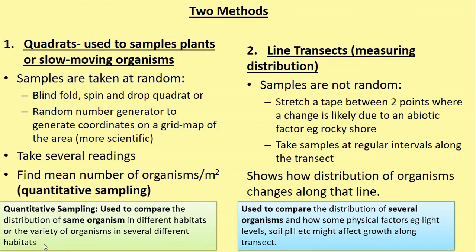We have two methods to know in more detail. Quadrats are used to sample plants or slow-moving organisms. Line transects measure the distribution of species within a habitat. Take a minute to read the slides in front of you.